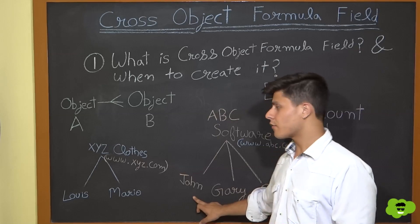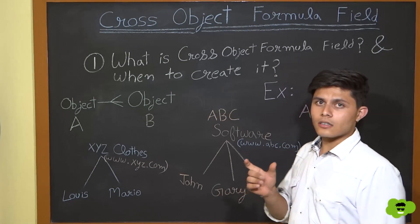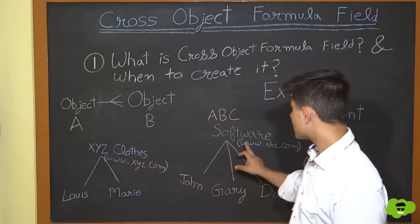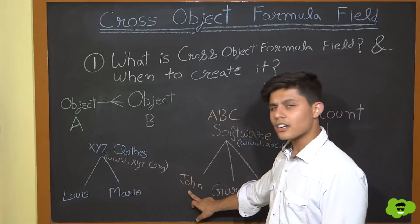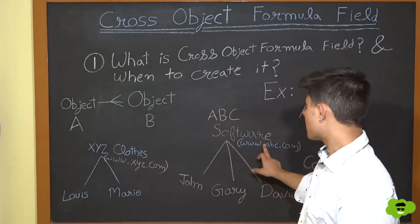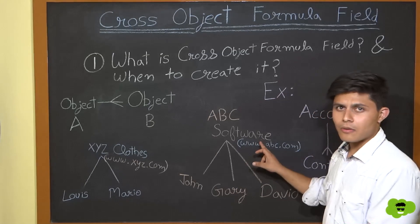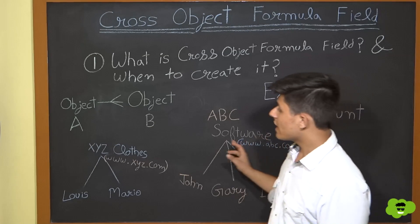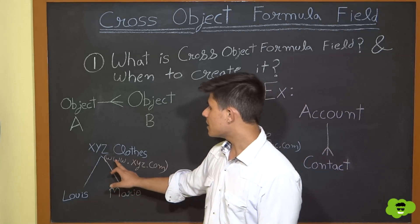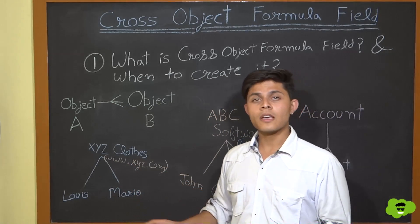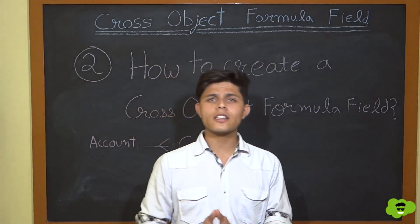If you want the website field of the account record to be visible on the contact record, you create a cross-object formula field on the Contact object. John and Gary's contact records will show www.abc.com, while Louis and Mario's contact records will show www.xyz.com. This is how cross-object formula fields work.